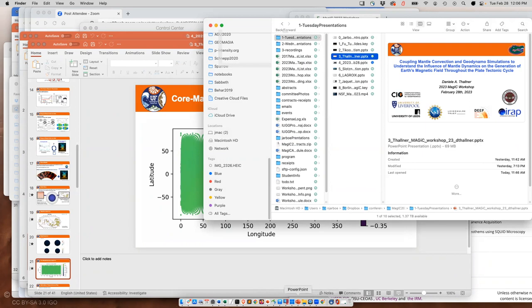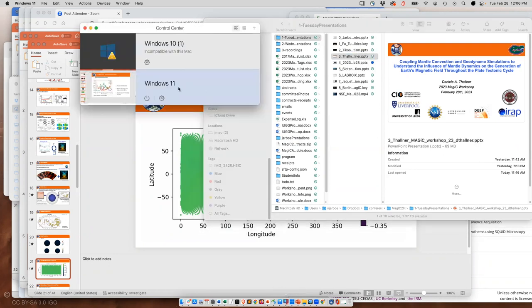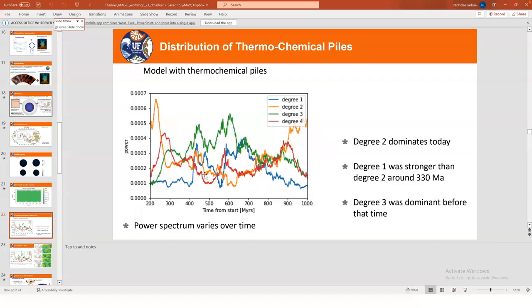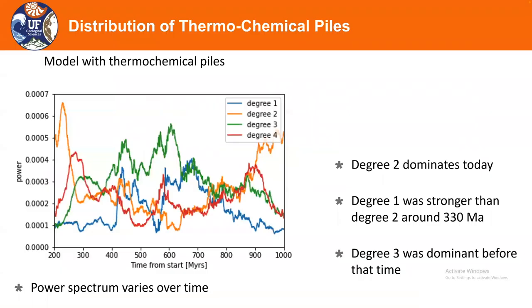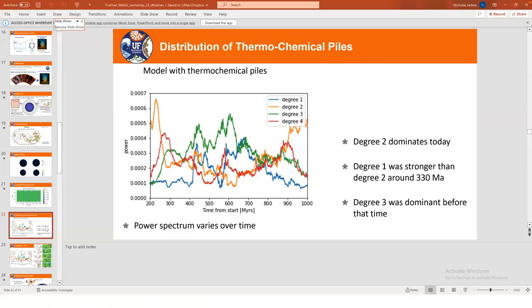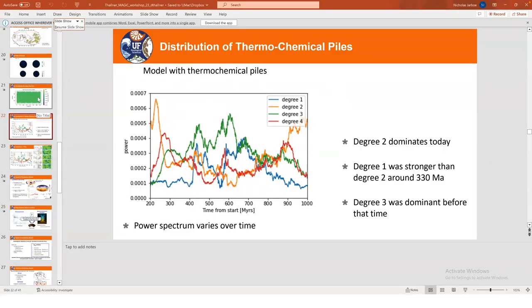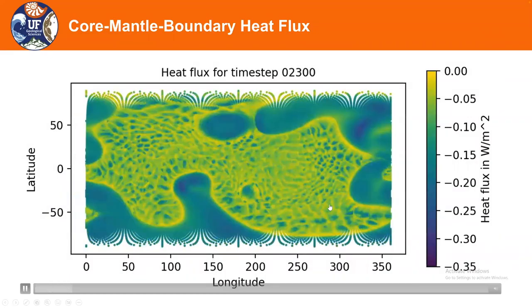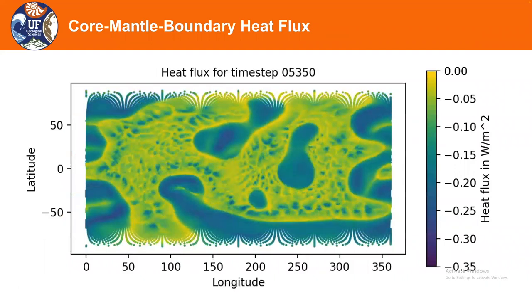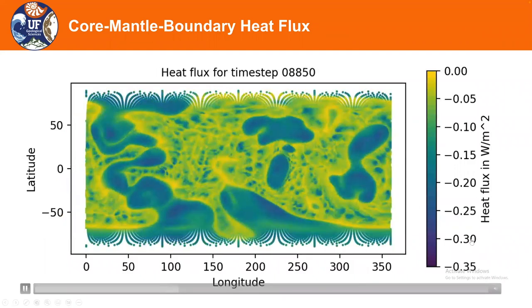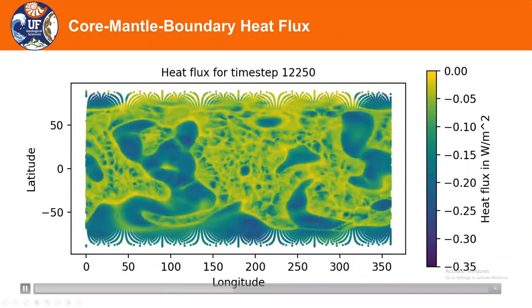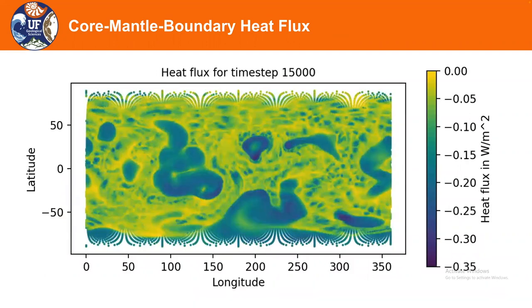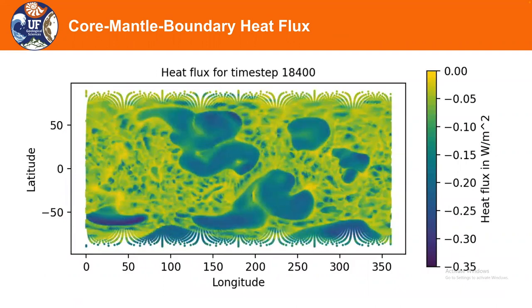What you're going to see is the evolution of the heat flux at the core-mantle boundary through time while running the model. At the moment you're only seeing a homogeneous heat flux, and you will see exactly the same until the first slabs reach — approximately 190 million years in. And you can watch how the pattern changes through time over one billion years from beginning to end.